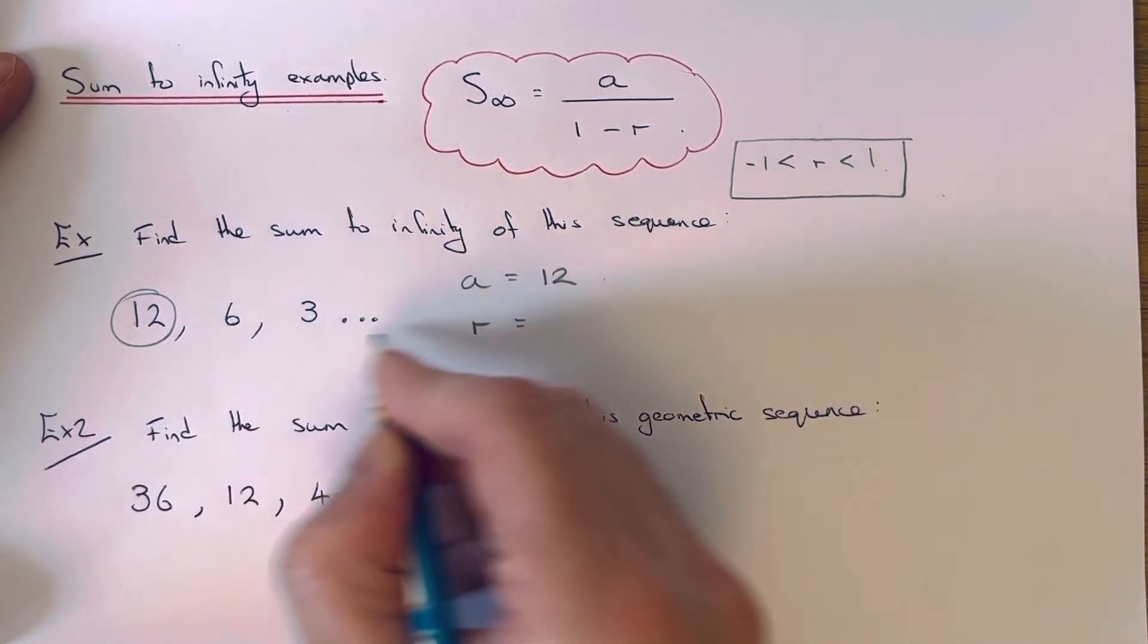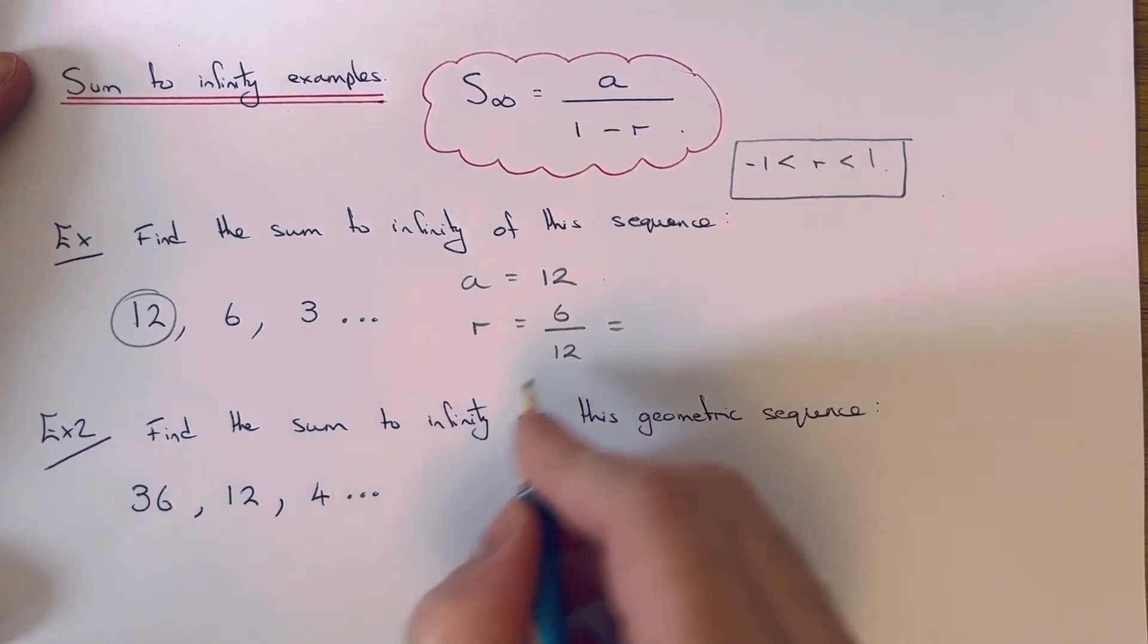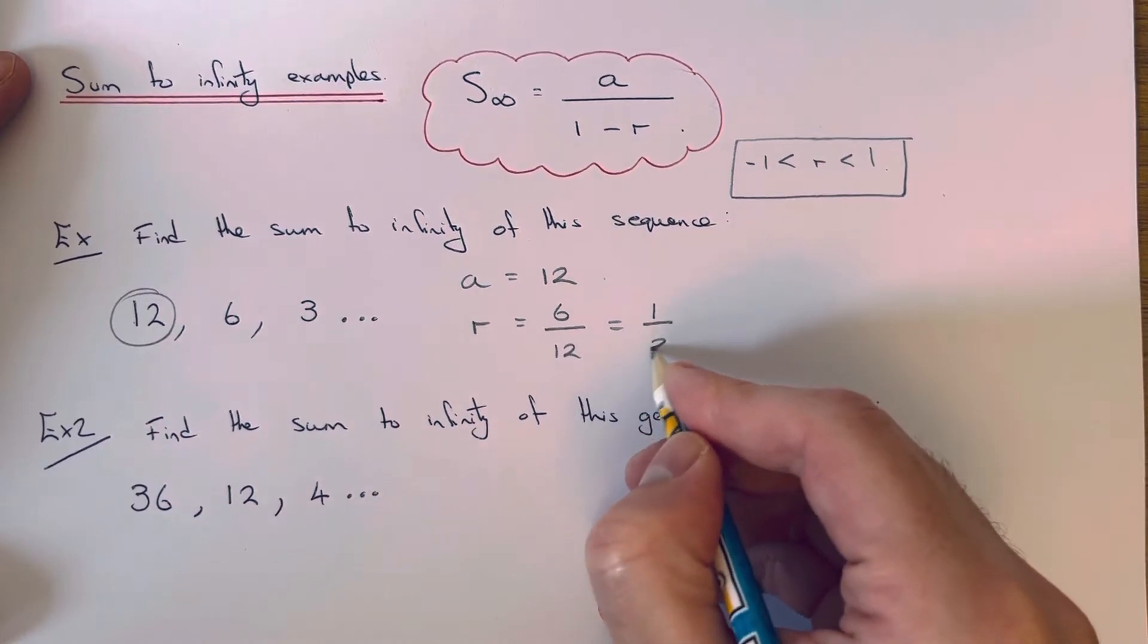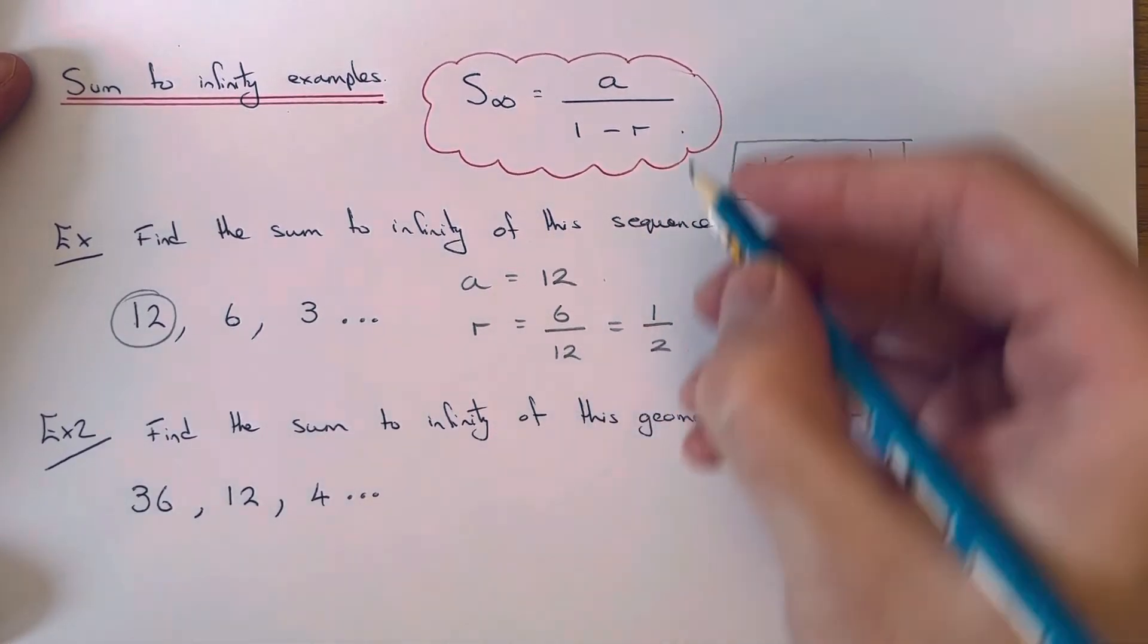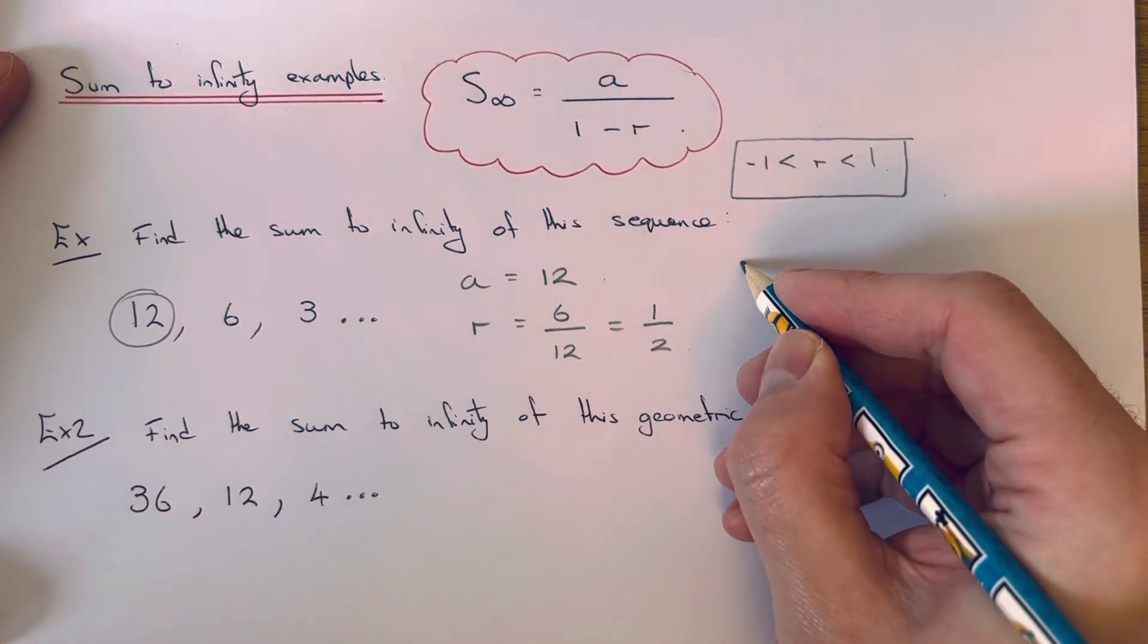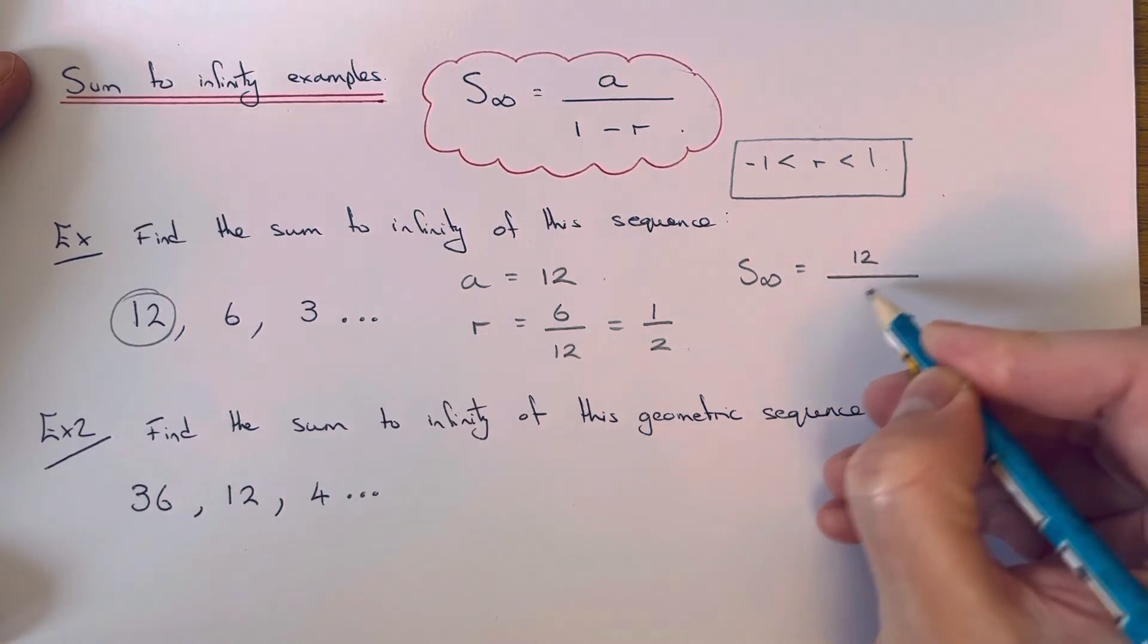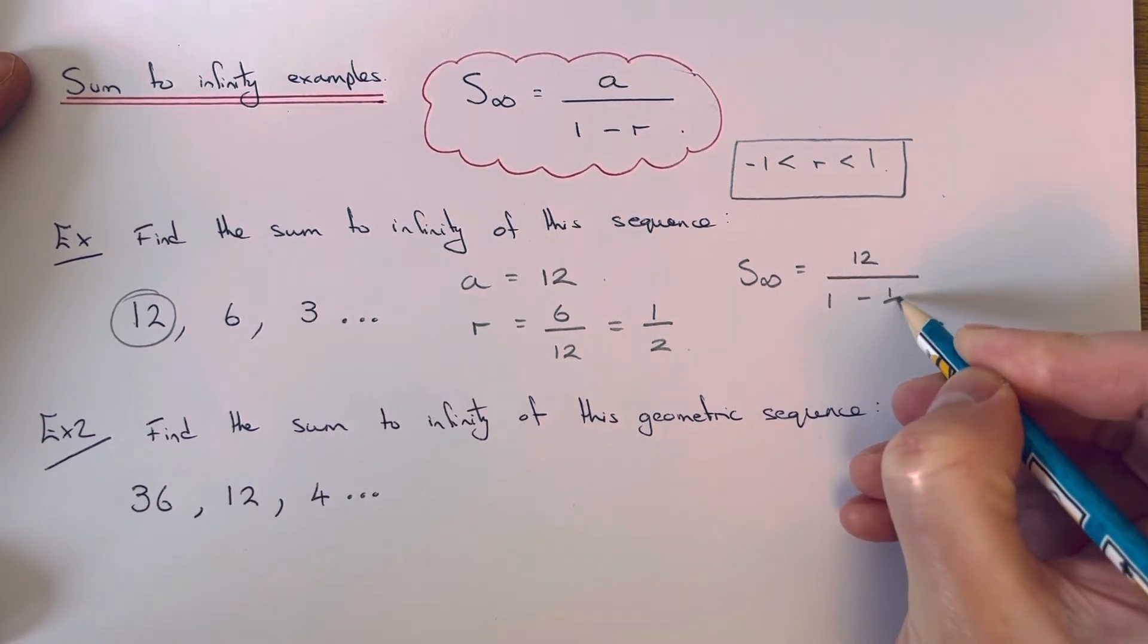To get the common ratio, we can divide the second term by the first term. So we do 6 divided by 12, so this is the same as one half. So all we need to do now is substitute our numbers into the formula above.